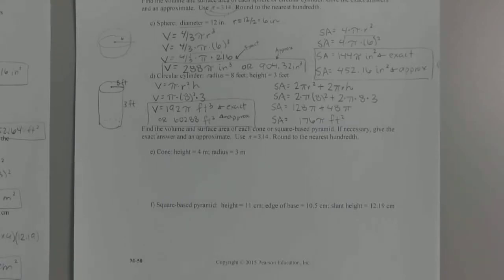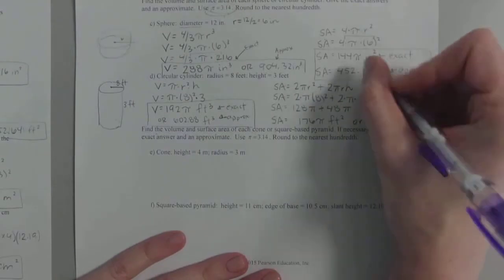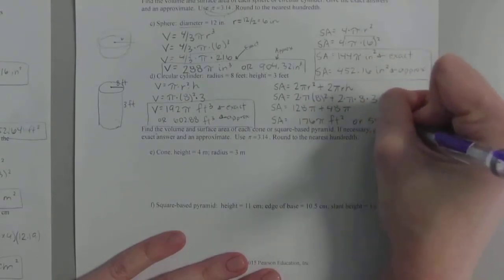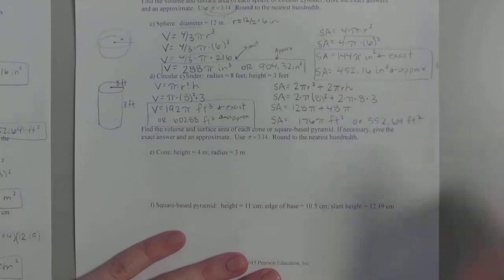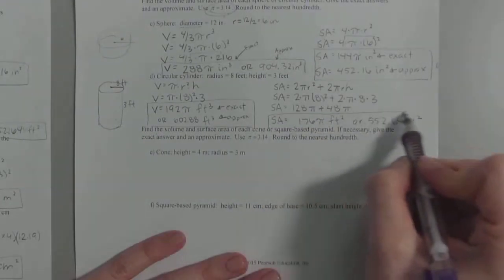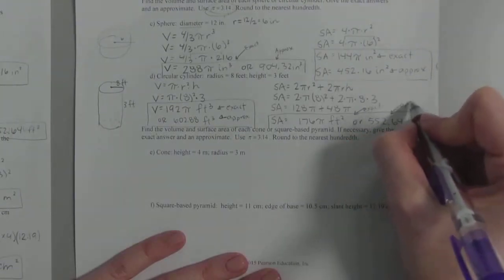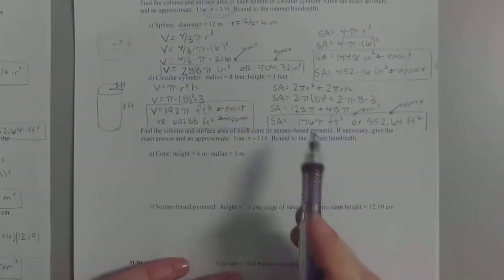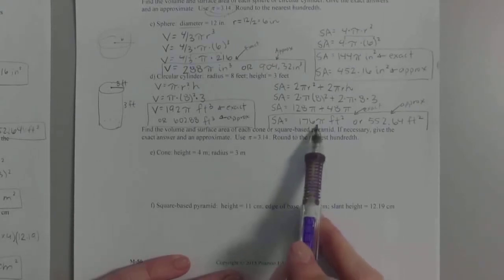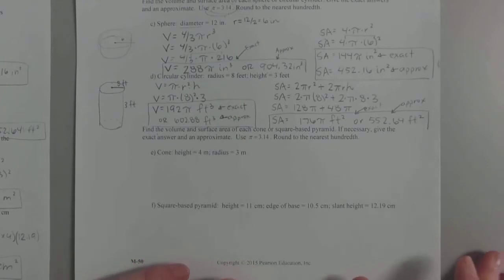Yep, but what's nice, though, is once you've done the exact, you've done the hard work. For approximate, notice all we have to do is take 176 times our pi. So rounded to two decimals, you've got 552.64. So that's the exact, and that's the approximate. And again, what's nice is once you've done the hard work, when you've done the exact, at this point it's just multiplication by 3.14. All right, last one. You guys are doing great.